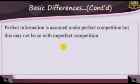6. A perfectly competitive firm only has the output decision to make, but not the pricing decision. But under an imperfectly competitive industry, the firm can either make output or pricing decisions.